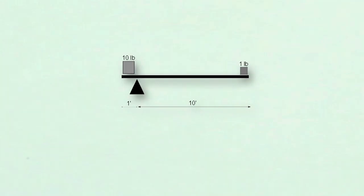On the left, 10 pounds times one foot of movement equals 10 foot pounds. On the right, one pound times 10 feet of movement equals the same, 10 foot pounds.